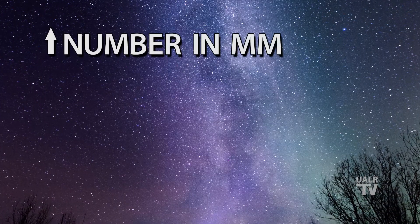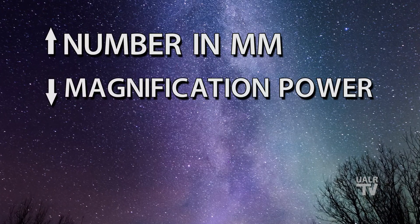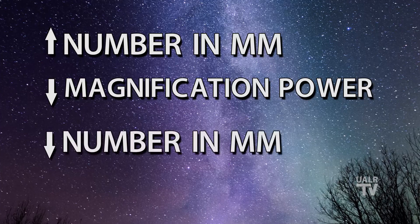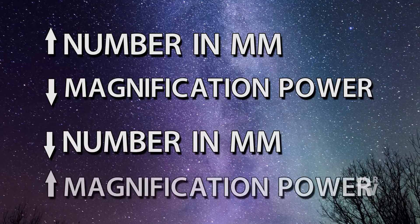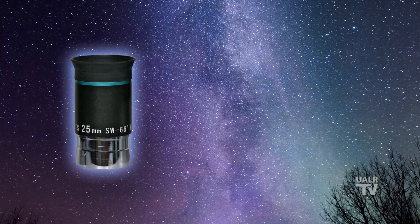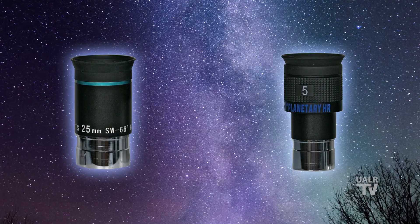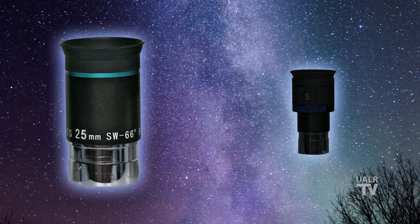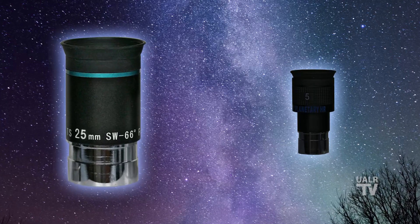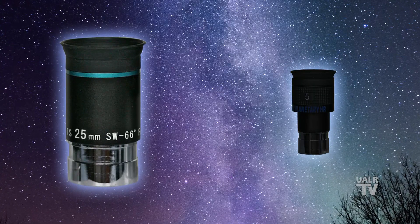The higher the number that's stamped onto your eyepiece, the lower the power will be, while lower numbers on the eyepiece will yield higher magnification powers. Let's say that you have a 25-millimeter eyepiece and a 5-millimeter eyepiece. Which one will yield the lowest power? If you said the 25-millimeter eyepiece, then you're correct.